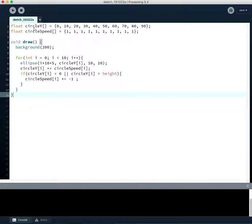So now we have these two arrays: float circle y, and these are the y points, the starting y points of each of the y coordinates of the circles. Then the circle speed here, these are going to be the speeds of each circle. Now you see it's just one, but we're going to mess with this and make it more fun.